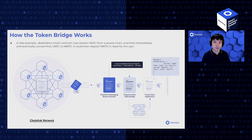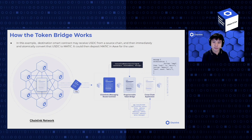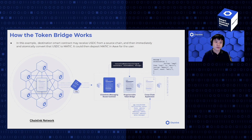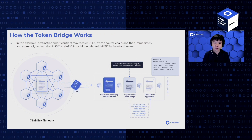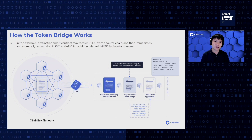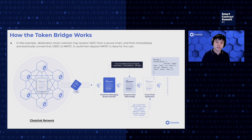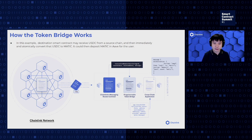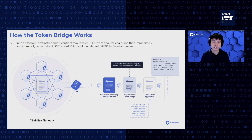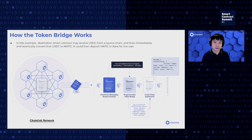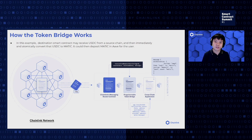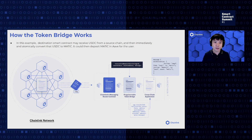For example, an application built on top of the programmable token bridge could have a destination smart contract receiving USDC from a source chain. Because it has instructions, it can immediately, in the same transaction, convert that USDC to Matic, then place the Matic in a money market dApp like Aave where it can start receiving interest. Many dApps could combine these orchestrations together and create cross-chain DeFi strategies. These use cases and possibilities will only exist if application developers build on top of this platform, and that is exactly what we want to support.